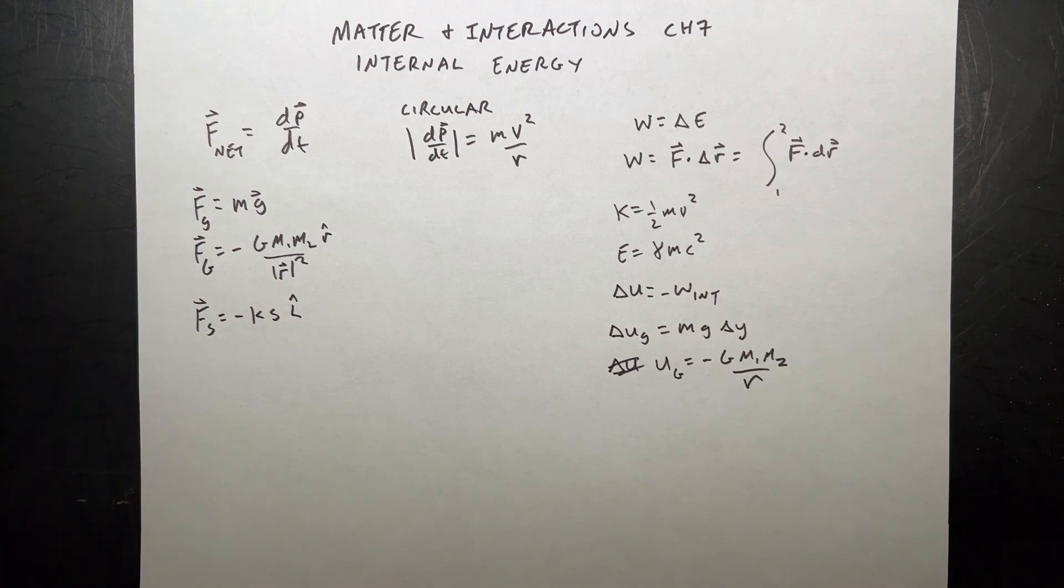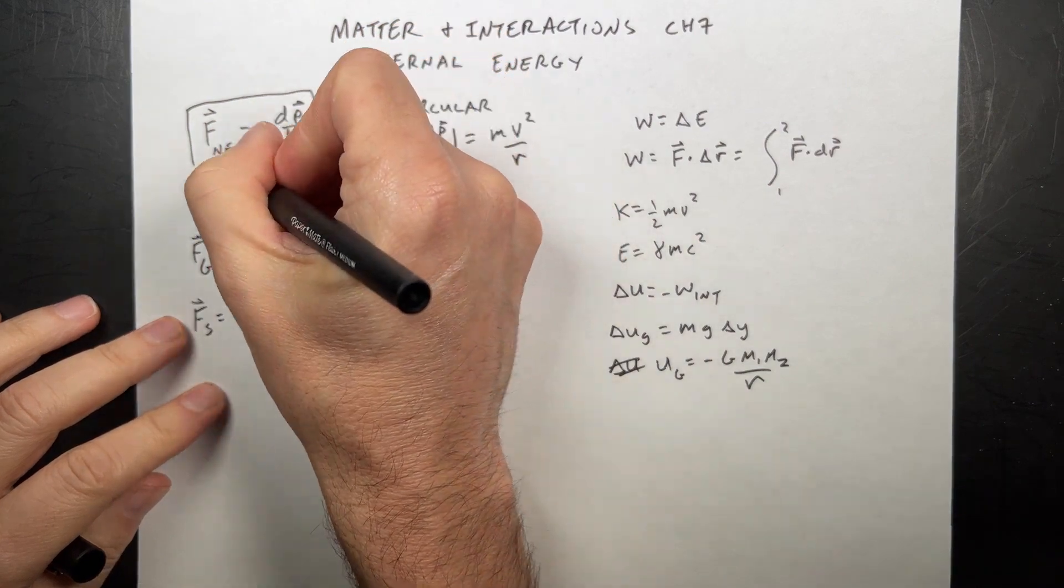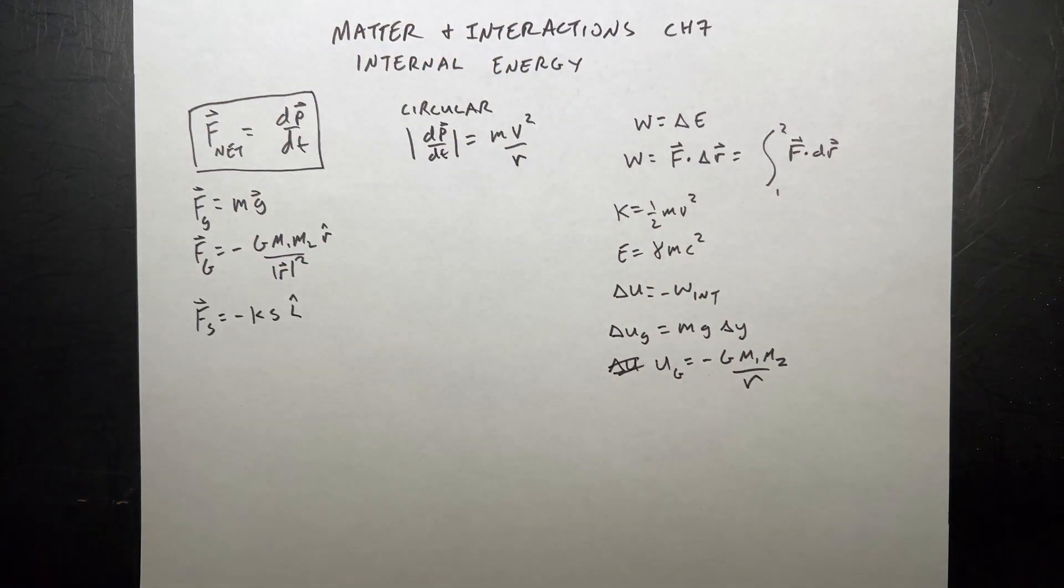Before we get into that, let's briefly review the big ideas we've done so far. The very first one is the momentum principle. That's really where we started. This says that forces change the momentum of an object. We can write that as a time derivative of momentum. If the force is constant, we can write that as a finite change.